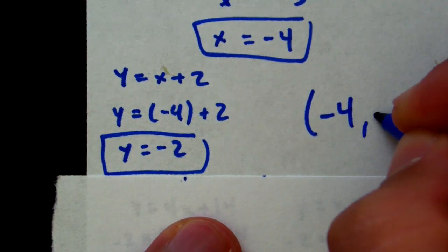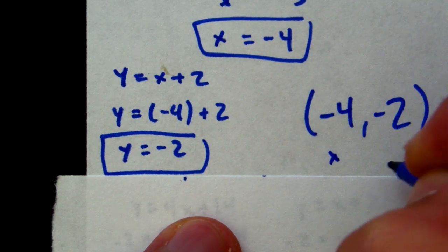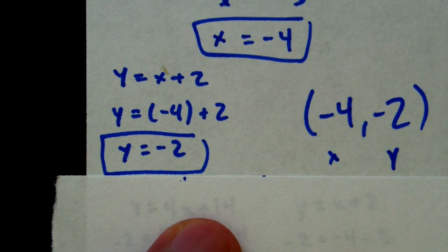So, our ordered pair should be negative 4, negative 2.